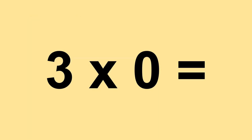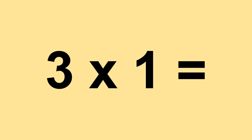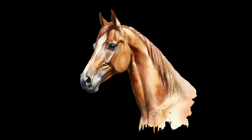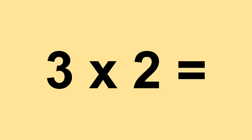3 times 0 equals 0. 3 times 1 equals 3. 3 times 2 equals 6.